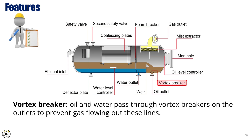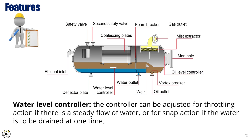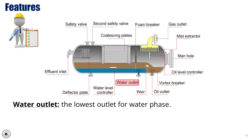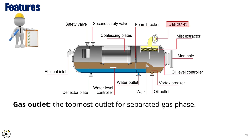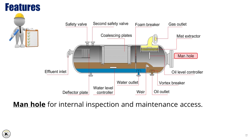Oil and water pass through vortex breakers on the outlets to prevent gas flowing out these lines. When the oil level changes, according to the principle of Archimedes, the plunger will be buoyed up by a force equal to the weight of the displaced fluid. The water level controller can be adjusted for throttling action if there is a steady flow of water, or for snap action if the water is to be drained at one time. The mid-level outlet is for the oil phase, the lowest outlet for the water phase, and the topmost outlet for the separated gas phase. Pressure safety valves protect the separator from overpressure conditions, and a manhole provides internal inspection and maintenance access.